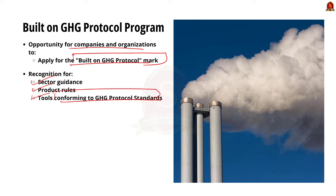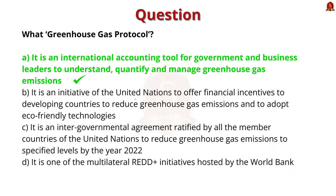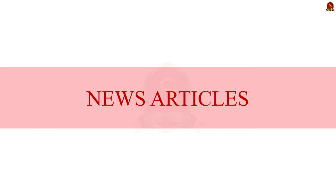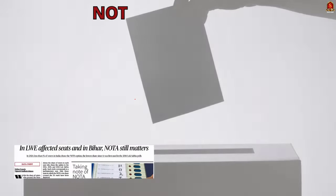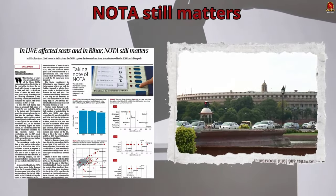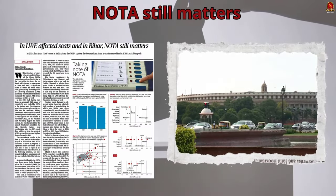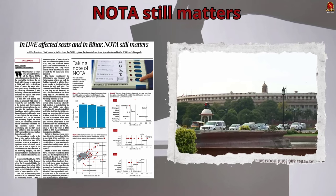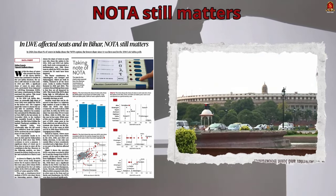That's all about this discussion. With this, let's move on to our daily newspaper analysis. This article speaks about the trend of NOTA votes in left-wing extremism affected areas. Let us analyze this article and understand some important points.